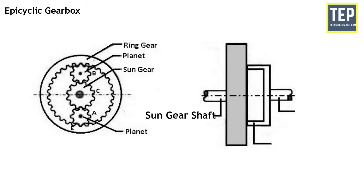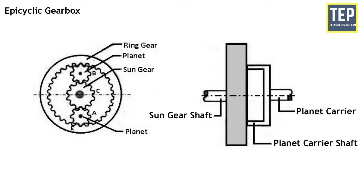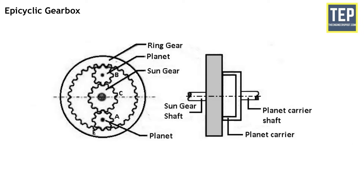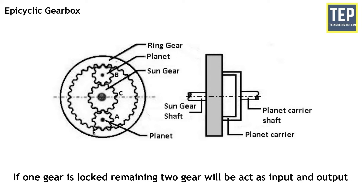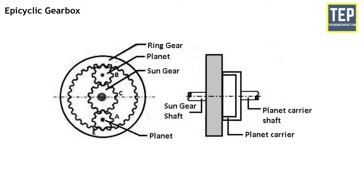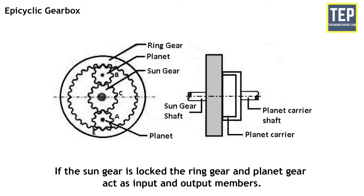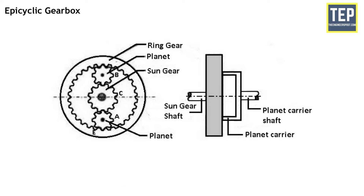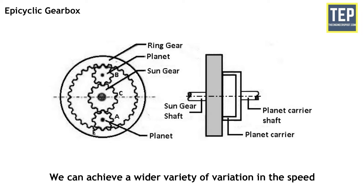The sun gear is mounted on the sun gear shaft, the planet gear is mounted on the planet carrier, and the ring gear is mounted on the planet carrier shaft. The ring gear has internal teeth which mesh with the planet gear to rotate with it. In the epicyclic gearbox, one gear is locked at a time while the remaining two act as input and output. For example, if the sun gear is locked, the ring gear and planet gear act as input and output members. This arrangement allows locking any one gear and taking output power from another, while giving power input to any gear — enabling a wide variety of speed variations.